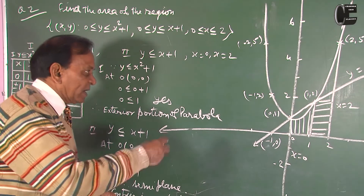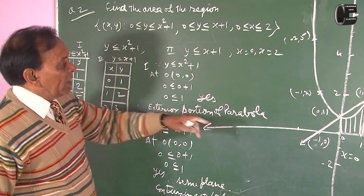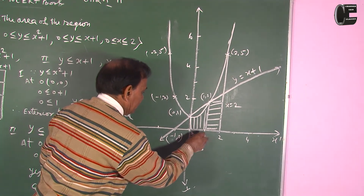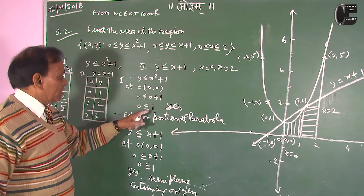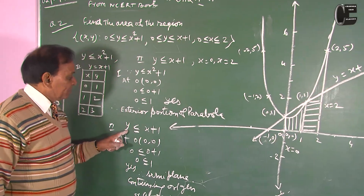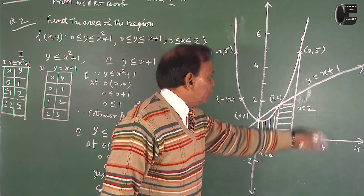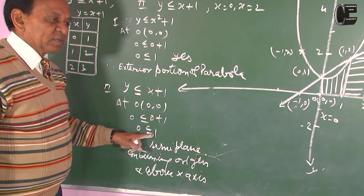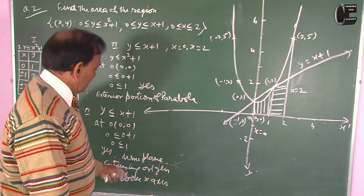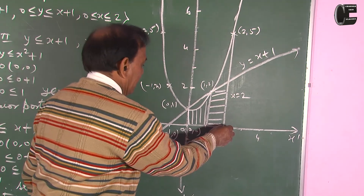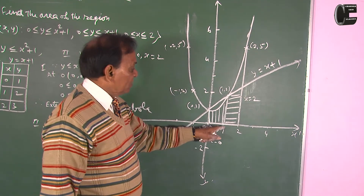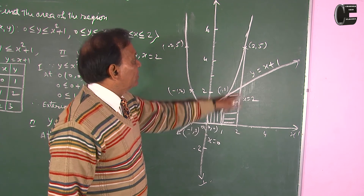We need to determine which area to calculate. This is the interior and exterior portions of the parabola. At origin (0, 0): putting x=0, y=0, we get 0 less than or equal to 1 — yes, true. Therefore the exterior portion of the parabola is taken. Similarly for the line, at origin (0, 0): 0 less than 1 is satisfied, so the semi-plane containing origin is the required area. Taking x from 0 to 2 and above the x-axis since y is always greater than 0, the required area is this area plus this area, with point (1, 2), (0, 1), and (2, 5).